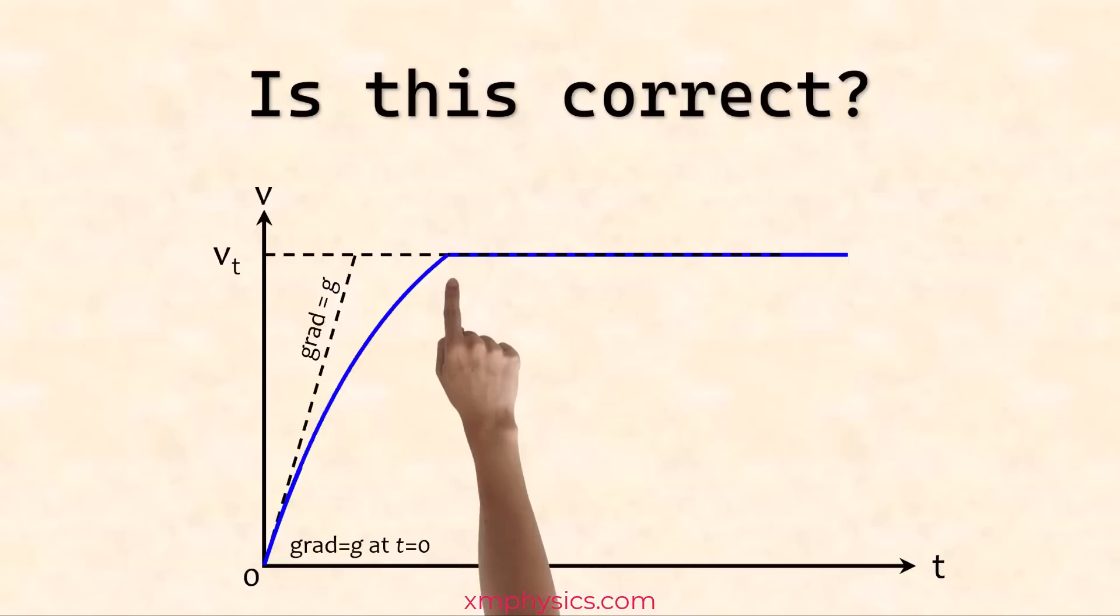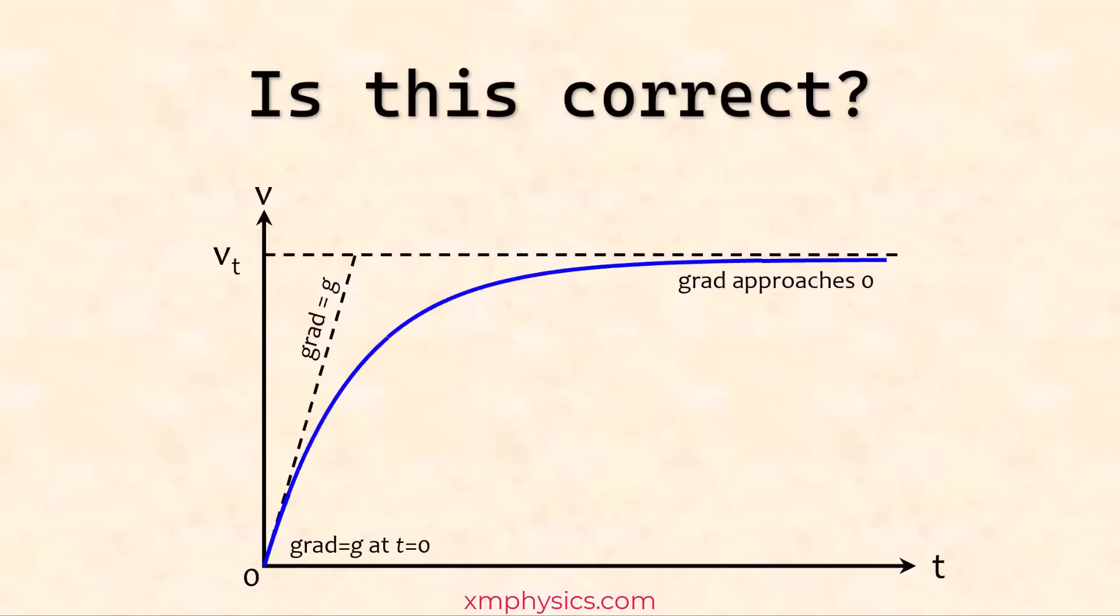The gradient of this graph has an abrupt change here. That means we are saying that the acceleration was non-zero and then suddenly it becomes zero. So as I said earlier, the acceleration has to change continuously. So it has to become zero gradually. In fact, in theory, it never actually reaches the terminal velocity because the gradient just become flatter and flatter and flatter as it approaches the terminal velocity, but it actually never quite reach it.